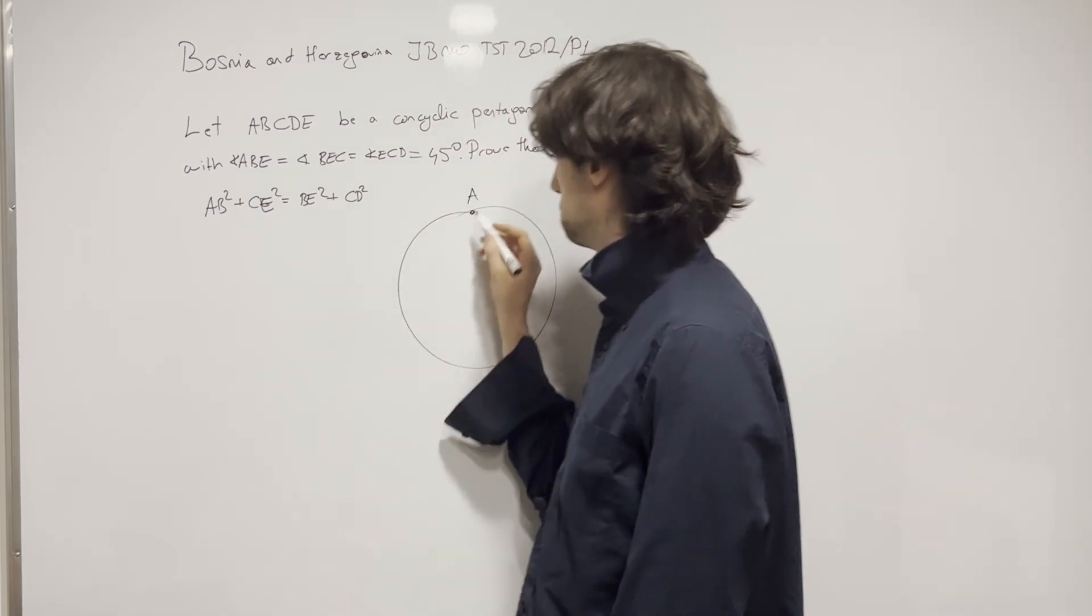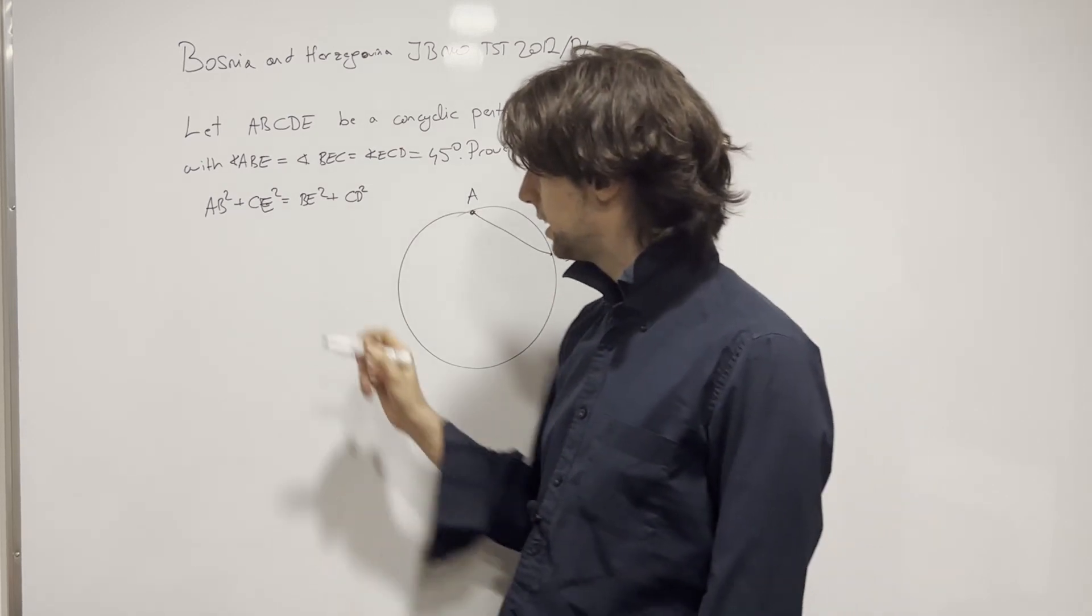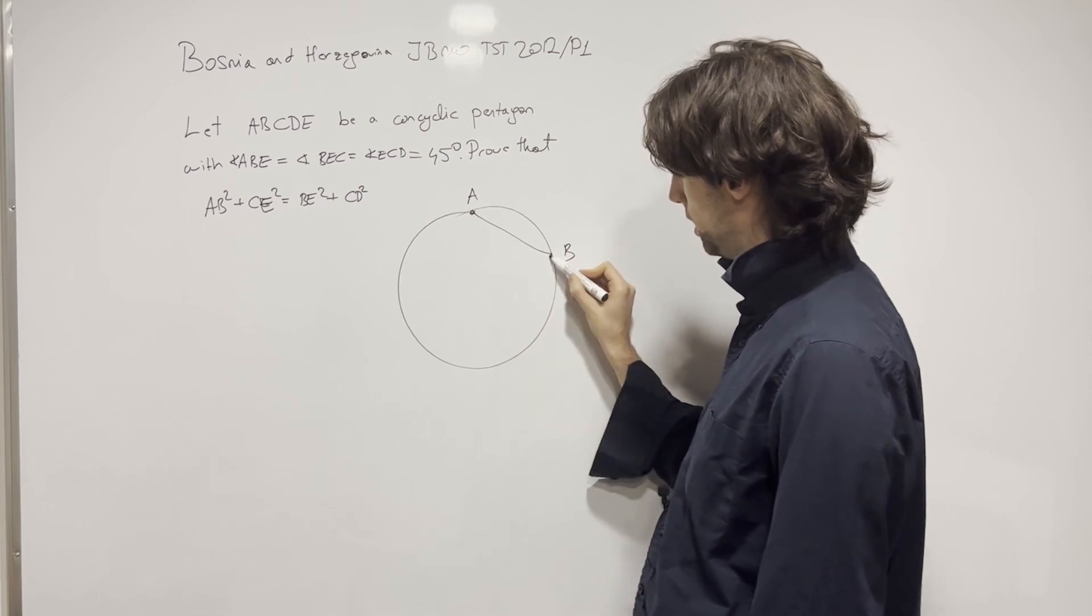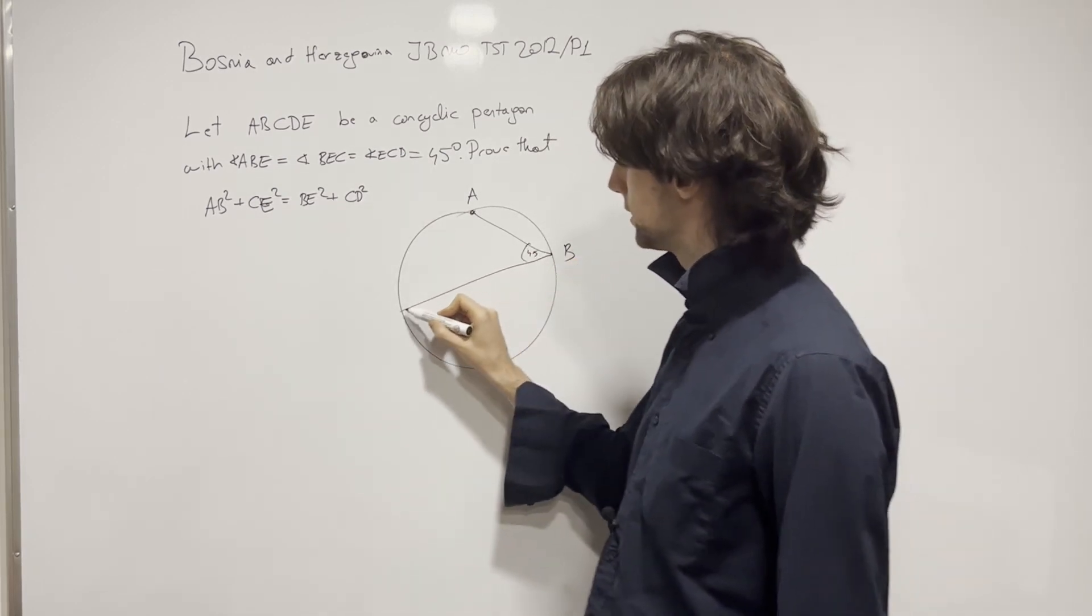Now let's put a point B somewhere. Doesn't matter where. And then we need E such that this is 45. So this is 90, and then 45. And this gives us point E.